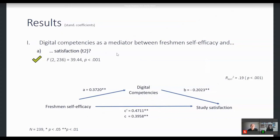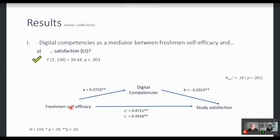To address the first research question, displayed here is the mediation model with blue lines. The predictor is freshman self-efficacy, and the outcome variable on the right-hand side is study satisfaction. The whole model revealed significance and we were able to explain about 19 percent of the variance. The idea was: the higher the level of freshman self-efficacy, the higher the study satisfaction — shown here with positive, significant standardized path coefficients. The further hypothesis was that higher freshman self-efficacy leads to higher self-reported digital competencies, which could then lead to higher student satisfaction.